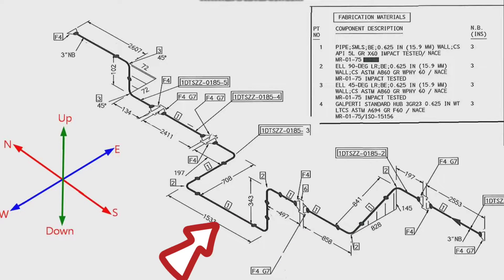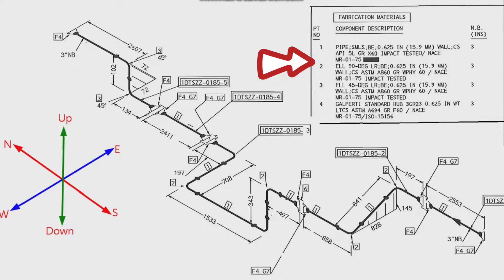This is a pipe isometric drawing. This is the list of materials for fabrication. In this drawing there are 5 separate pipe spools. This is the first spool.